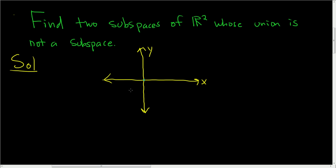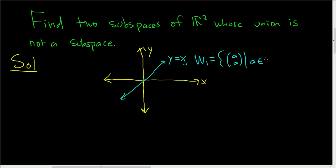One easy case is to take two lines that pass through the origin. So let's take this line here — this will be the line y equals x. This subspace we can call W₁. It's the set where the x and y components are the same, so y is always equal to x. We write this as {(a, a) | a ∈ ℝ}. This is certainly a subspace of R²: it contains the zero vector by setting a equal to zero, and it's closed under vector addition and scalar multiplication.